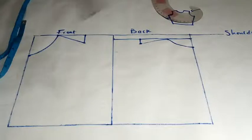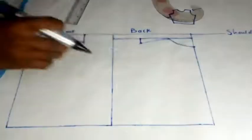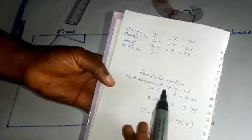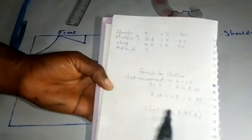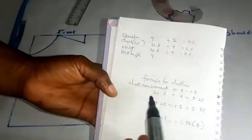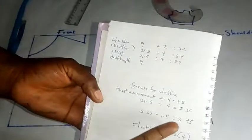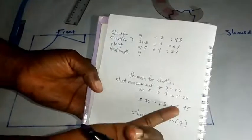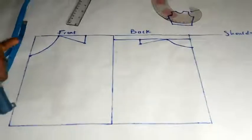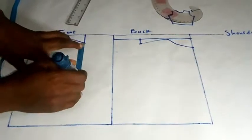Now I want to get the chest line. Our formula for getting chest line is chest measurement divided by 4 minus 1.5. My chest line is 21.5. By the time you divide 21.5 by 4, you get 5.25. If you minus 1.5 from 5.25, I'm left with 3.75. I can round this 3.75 to 4, so I'll be using 4 as my chest line.